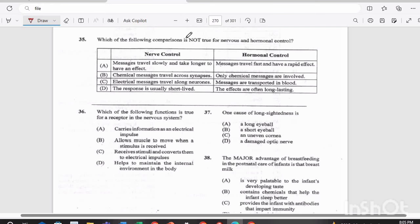Item 35. Which of the following comparisons is not true for nervous and hormonal control? A, nerve control messages travel slowly and take longer to have an effect, and hormonal control messages travel fast and have a rapid effect. B, chemical messages travel across synapses for nerve control, but only chemical messages are involved in hormonal control. Is it C, electrical messages travel along neurons for nerve control, or messages are transported in blood for hormonal control? And D, the response is usually short-lived for nerve control, and the effects are often long-lasting for hormonal control. Remember, we are looking for the comparison that is not true, and the answer there would be A, this is not true. Nerve control messages actually travel very fast, and for hormonal control, it's usually slower.